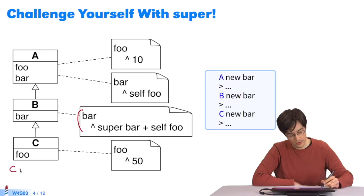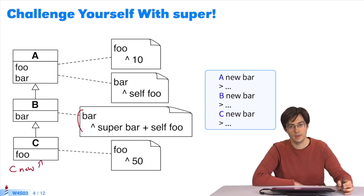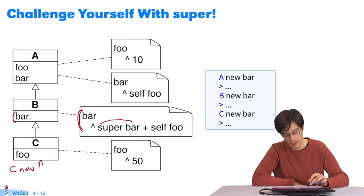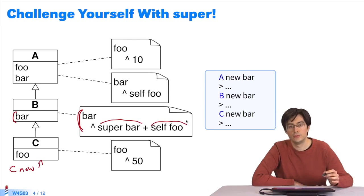In the case of C new bar, we wrote C new here. It is an instance of class C. We send it the message bar. Bar is sought in class C new. Not found. The class above is searched. It is there in B. So the B new bar will be executed. This bar is the sum of the two message sendings.